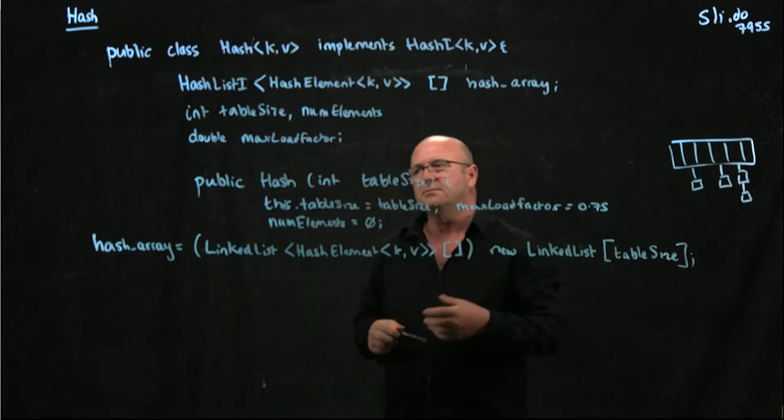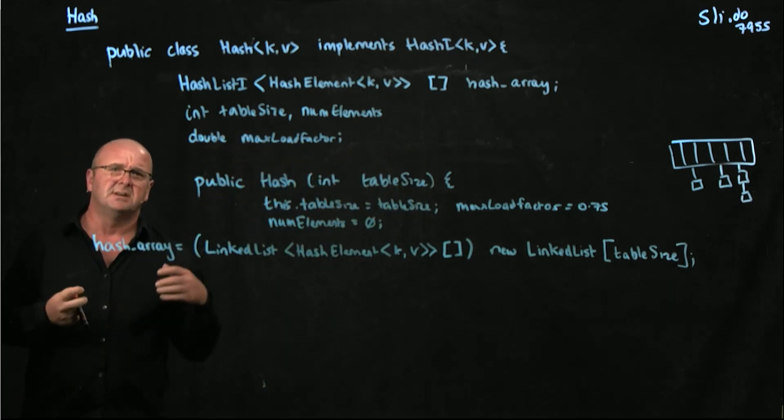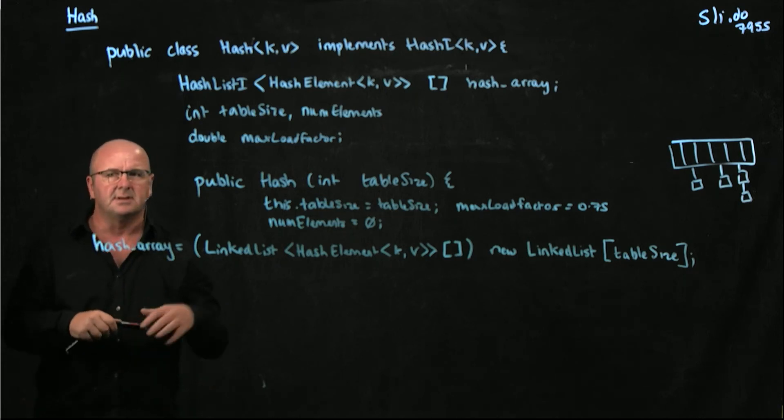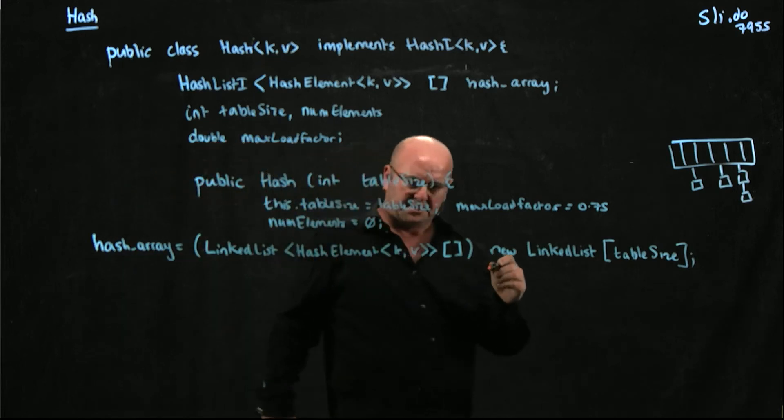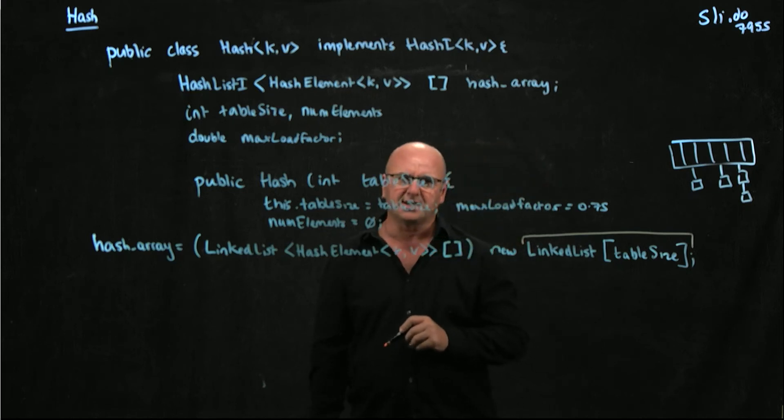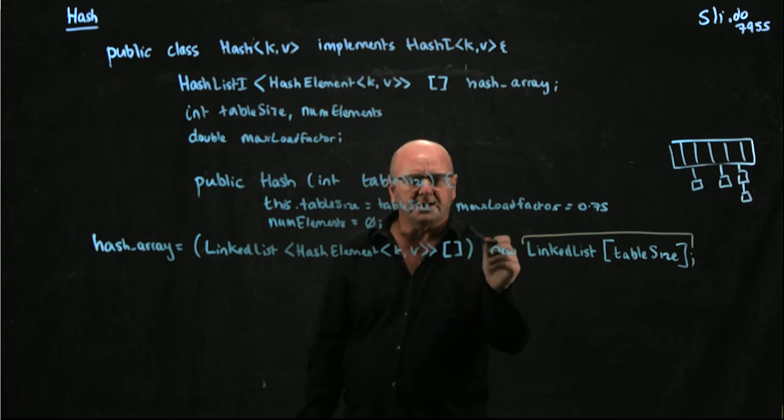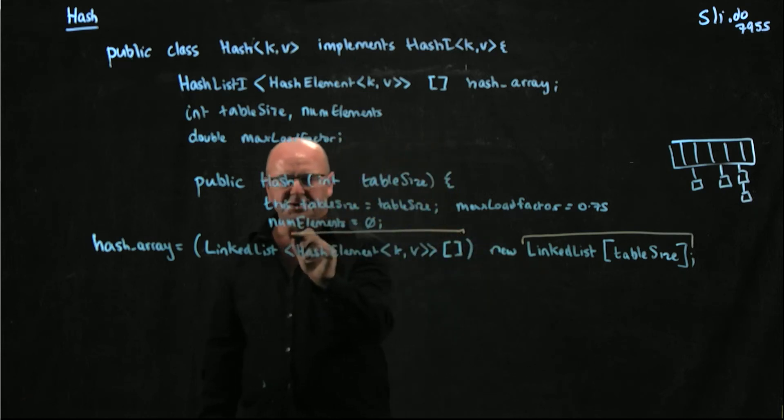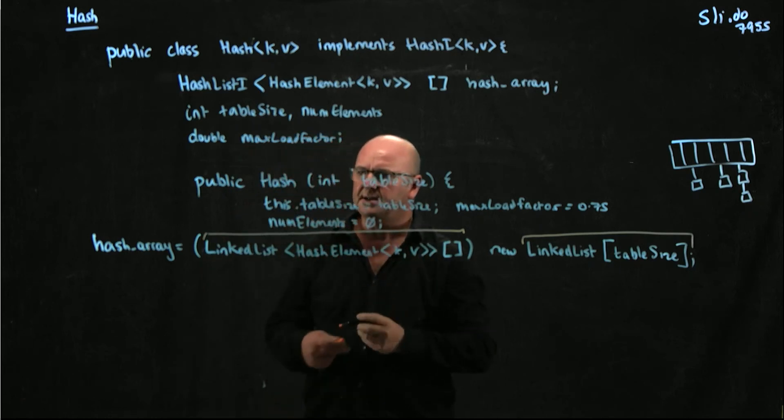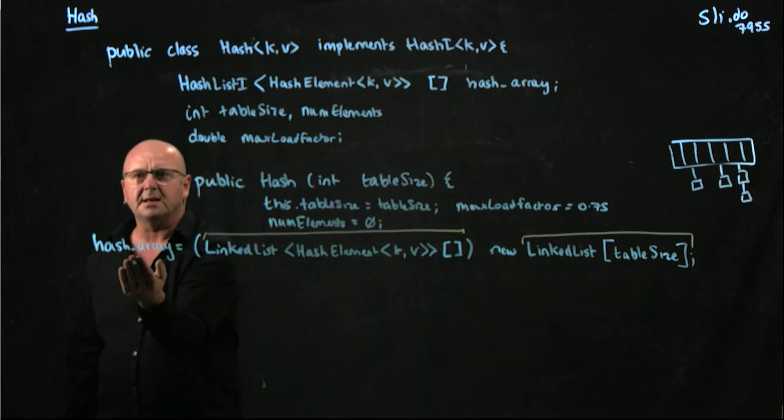So let me just explain what I've done here. So remember, with generics in Java, you can't just make a generic array because of type erasure. Java can't look at it and say, oh yeah, that's fine. That array contains only the things it's supposed to. Because it loses the type. And so what we do is we create an array of linked list objects. They're of size table size. That's our array. And then we cast that to be our generic array of linked list hash element kv array. So we're casting this array that we've made to be these objects. And that's what ends up in hash array.